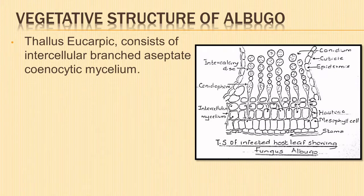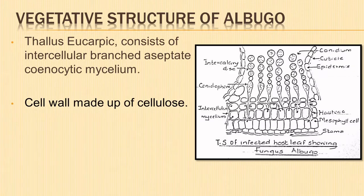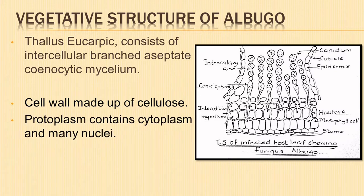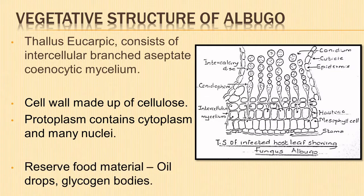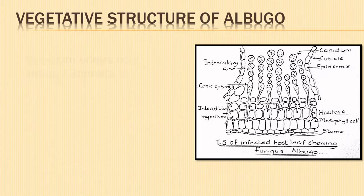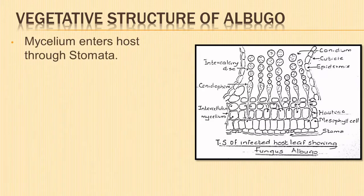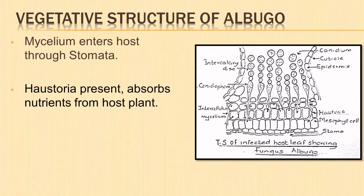The thallus is eucarpic. It consists of intercellular, profusely branched, aseptic mycelium. The cell wall of the fungus is made up of fungal cellulose. Protoplasm consists of cytoplasm and a number of nuclei. Reserve food material is in the form of oil drops and glycogen bodies. The mycelium enters the host through the stomata. The intercellular mycelium forms knob-like outgrowths known as haustoria, which absorb nutrients from the host plant.